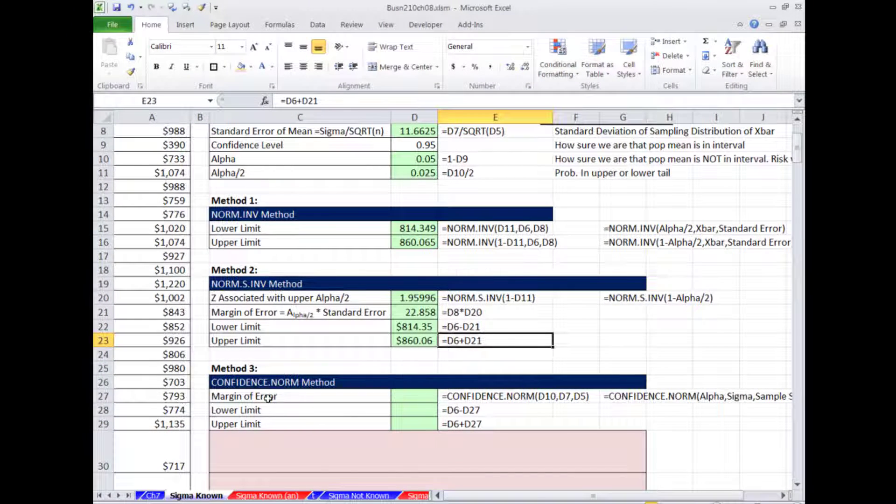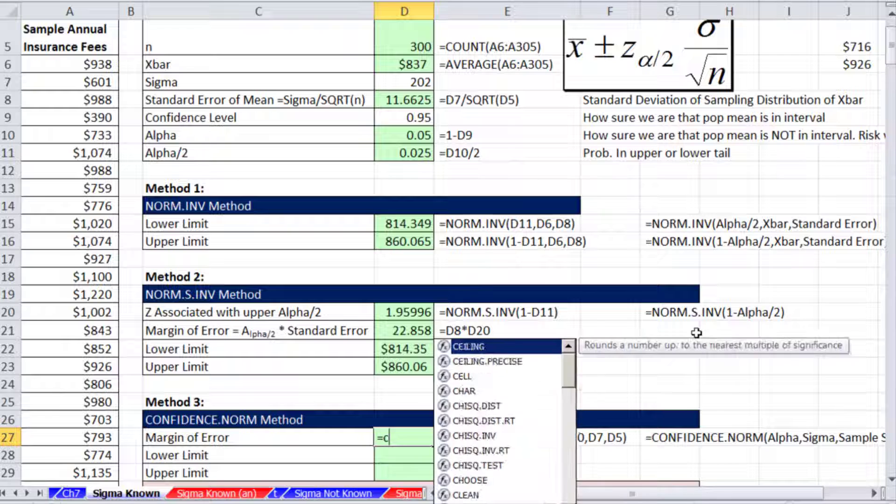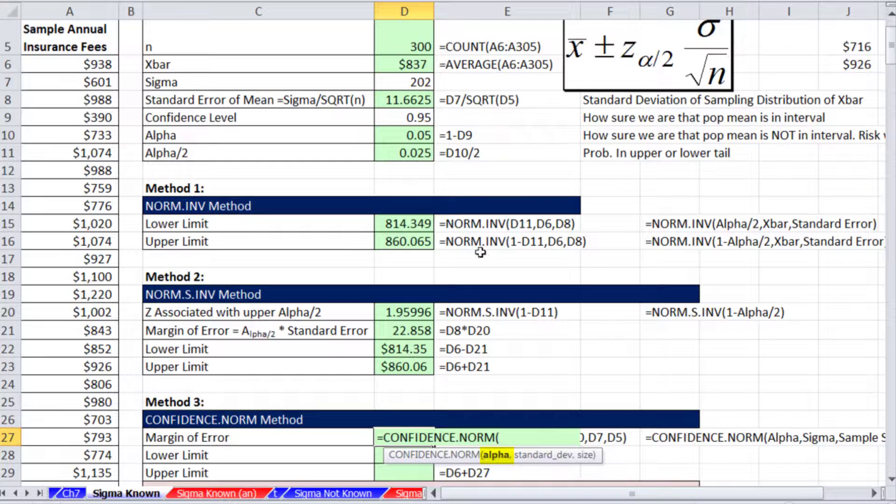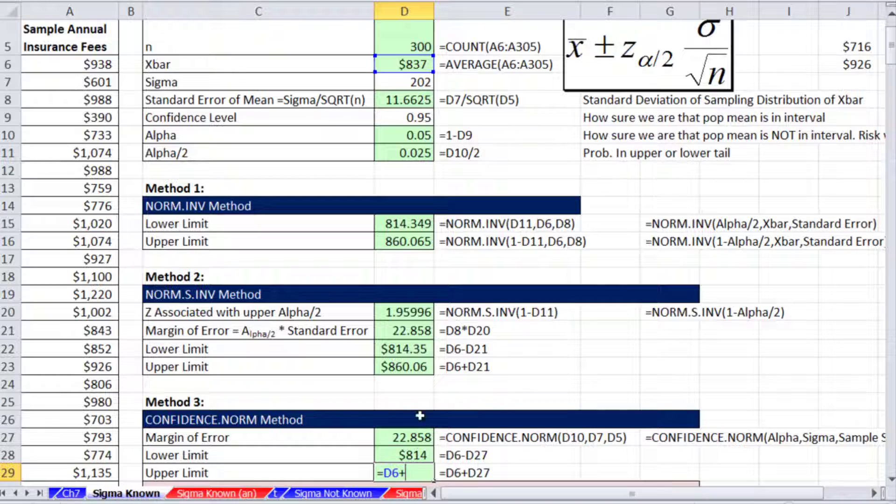Method 3. This is the CONFIDENCE.NORM function. CONFIDENCE.NORM directly calculates the margin of error. Equals CONFIDENCE.NORM. It wants alpha, the whole alpha. Standard deviation, it wants the sigma and then the size, the sample size. As we said last video, this formula says σ/√n. This function just needs the inputs. It's programmed underneath to calculate the standard error. So that's why we give it directly standard deviation from the population and n. It'll calculate our margin of error. And then from that, we simply say x̄ minus and x̄ plus our margin of error.